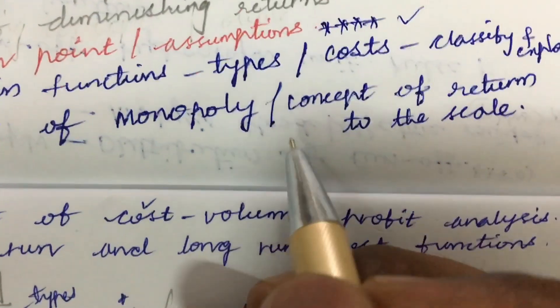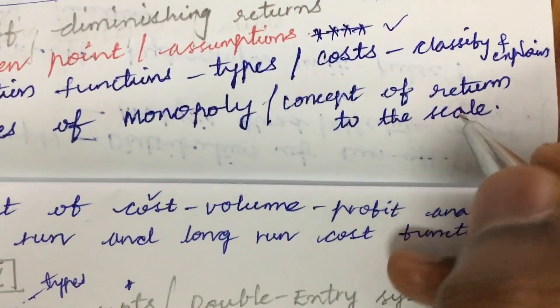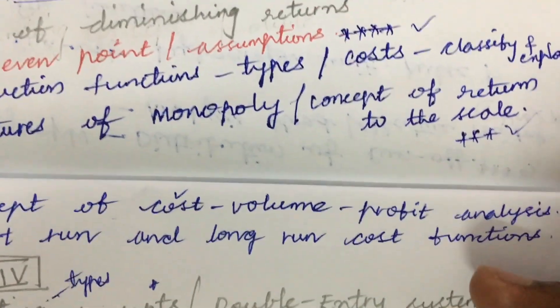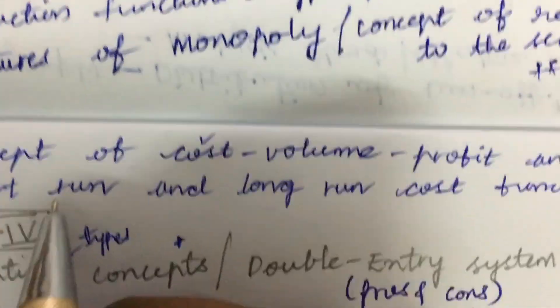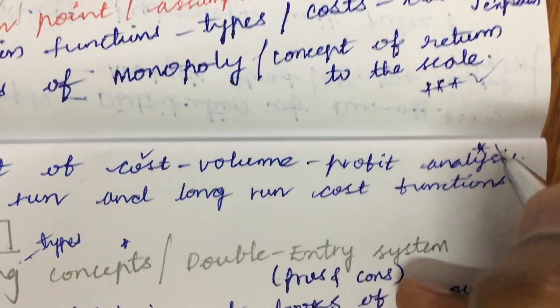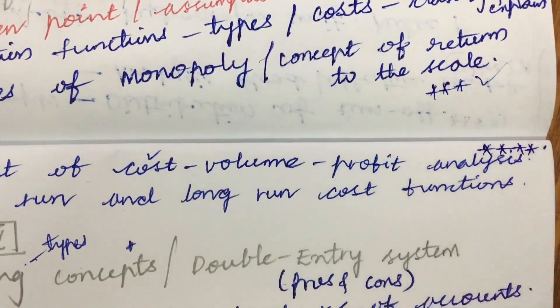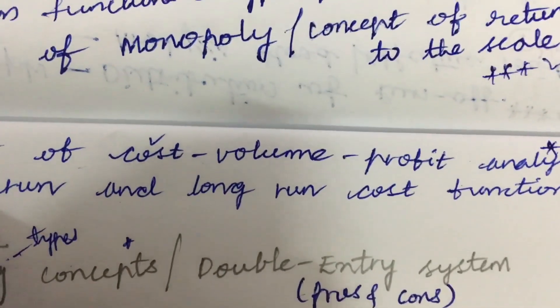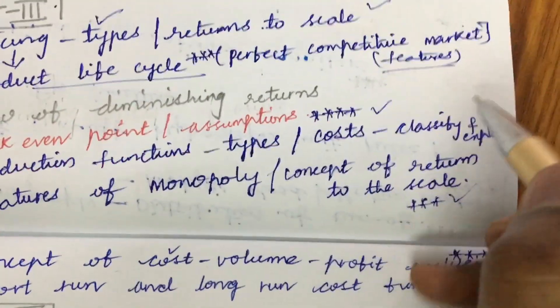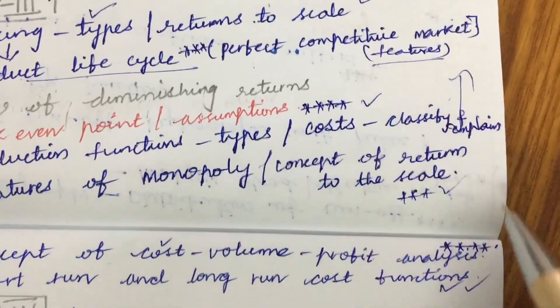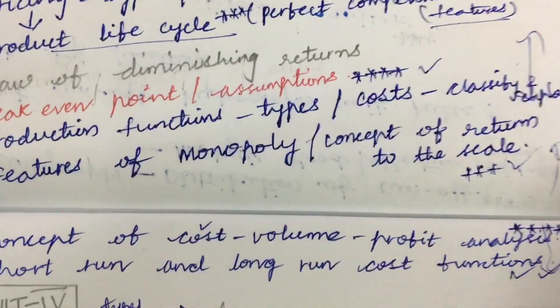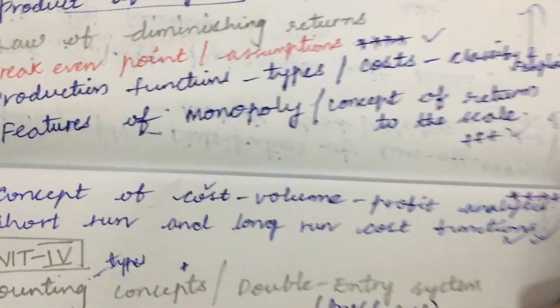Features of monopoly and the concept of returns to scale—I am expecting the concept of returns to scale for 10 marks or 5 marks this time. The concept of cost-volume-profit analysis is also very important, and the difference between short-run and long-run cost functions is asked for 5 marks. From these concepts you are going to get one question, and from these concepts you are going to get the other question—the 5th and 6th questions.